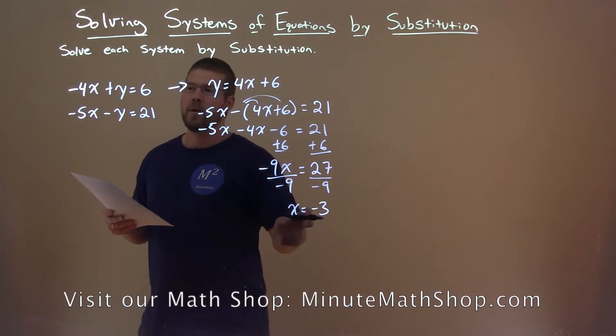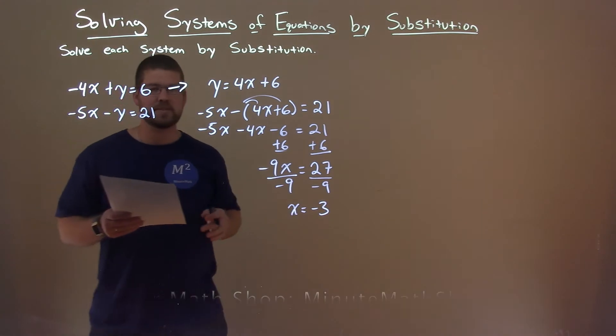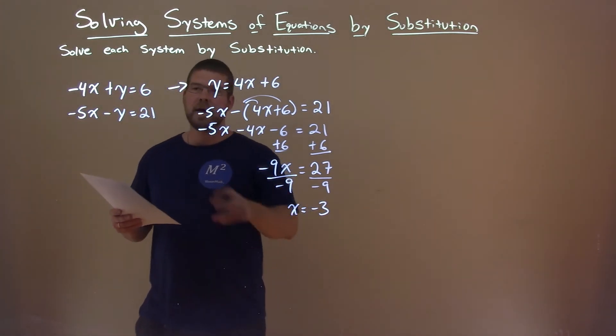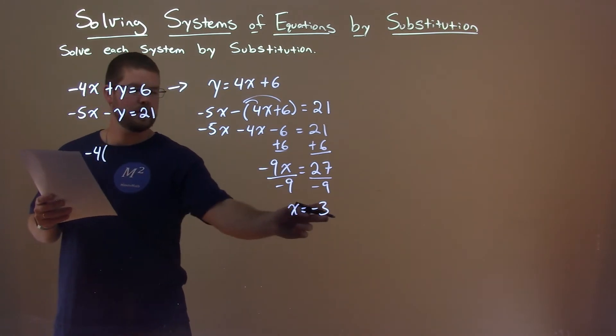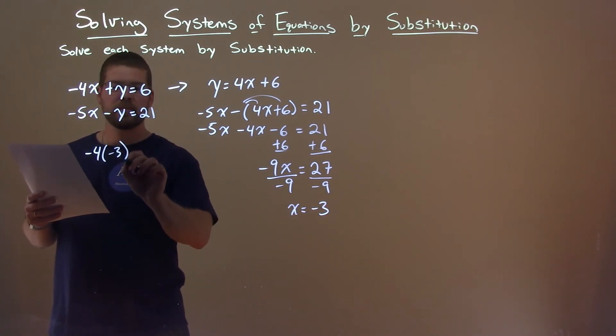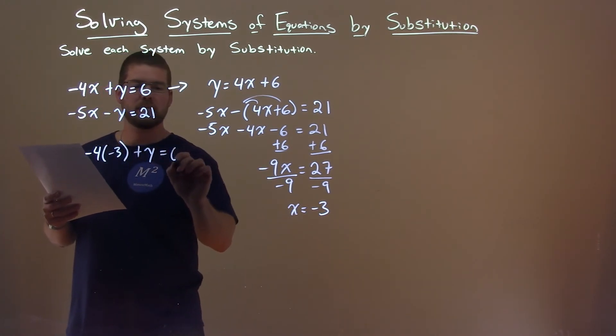Well, we want to take that value and plug it into one of our other equations and solve for y. I think the first equation is easier. We take negative 4 times negative 3 plus y equals 6.